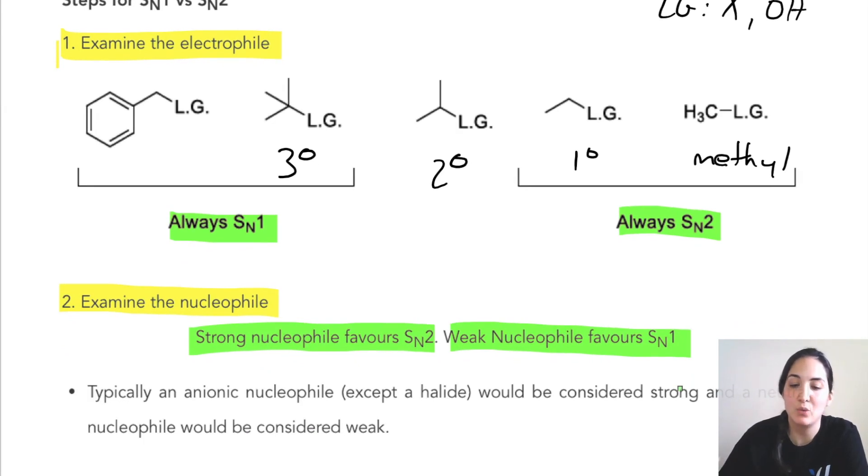How do we know if we have a weak or a strong nucleophile? Most often a strong nucleophile is something that is anionic. If we have OH⁻ for example, that would be a strong nucleophile. Halides tend to be in between, so you can't really make too many conclusions with a halide. But if you have OH⁻ or an ethoxide or cyanide, those would be strong nucleophiles. If you have something that's neutral, it's usually considered weak.